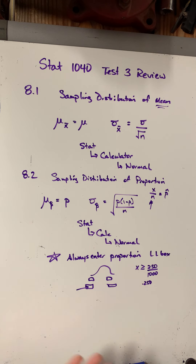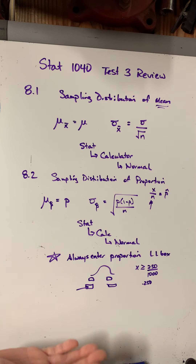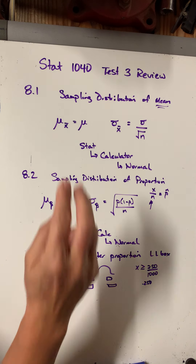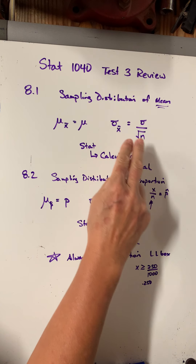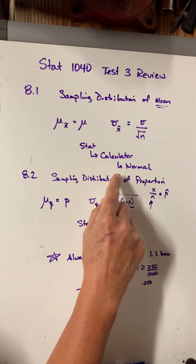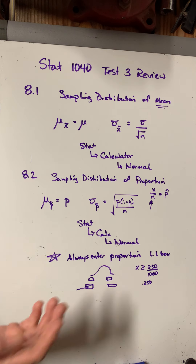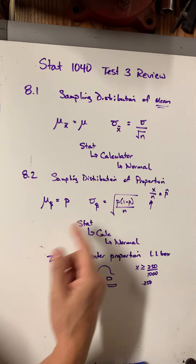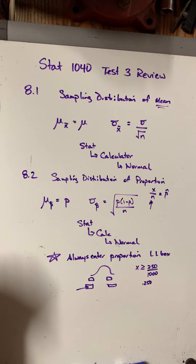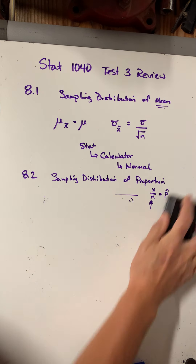For both sections, somewhere in there they also made you show that the distribution was normal. Then we moved on to Chapter 9.